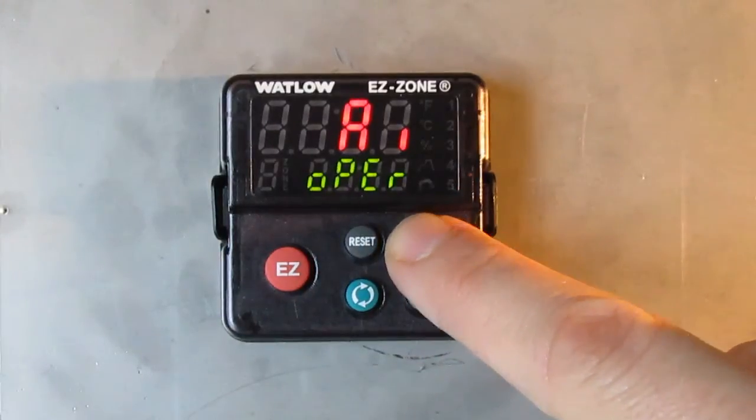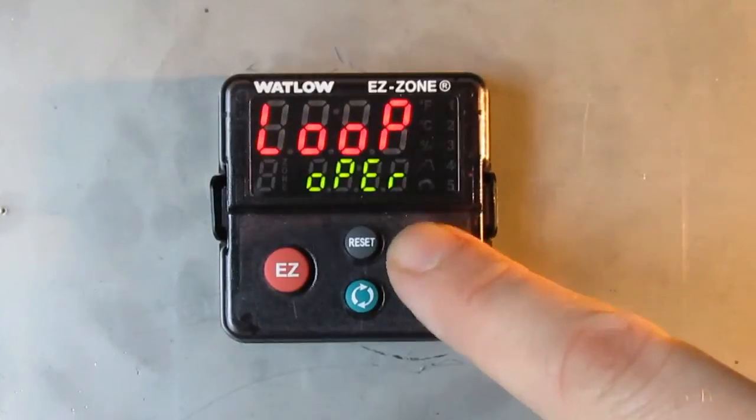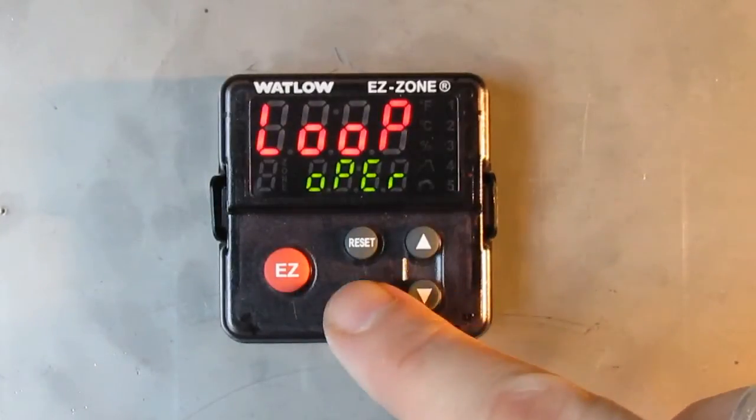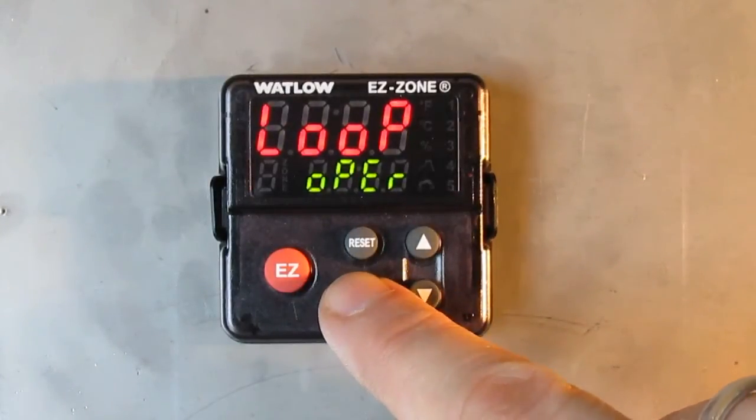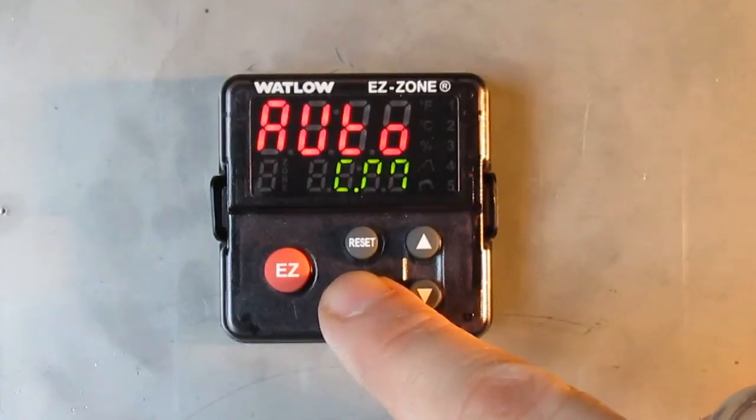Press the up arrow until you see loop. You'll press the green button one time, 2 times.